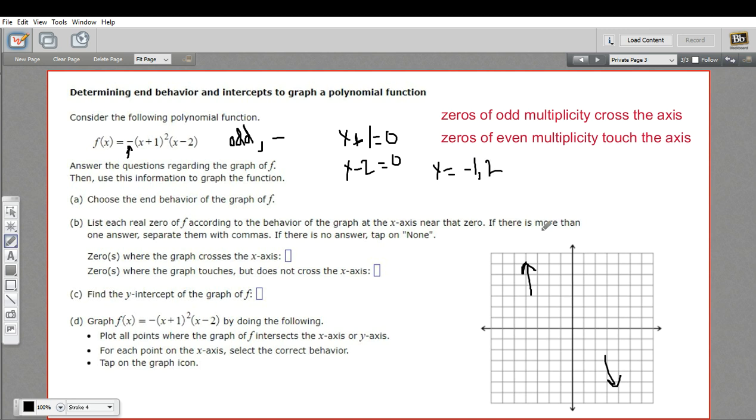So those are zeros of the function. And I can actually plot these right now. So negative 1 is here and positive 2 is here. Now, when we have a zero of a function, one of two things can happen. The function can go right through it, or it can just touch it and go back the other way. How do we know?